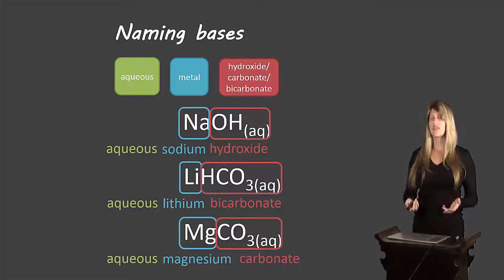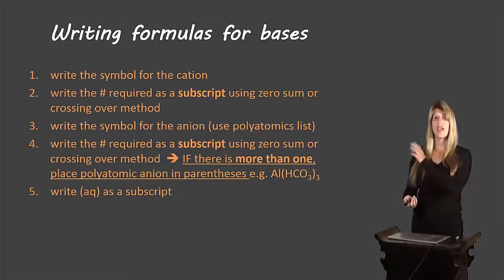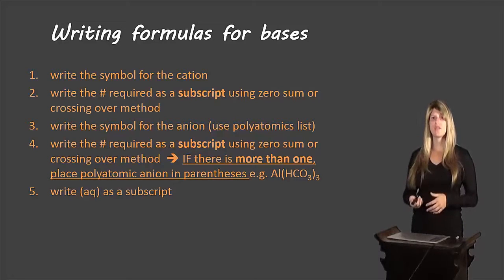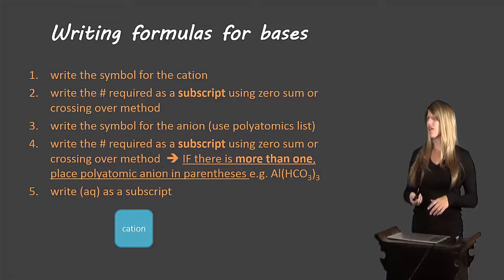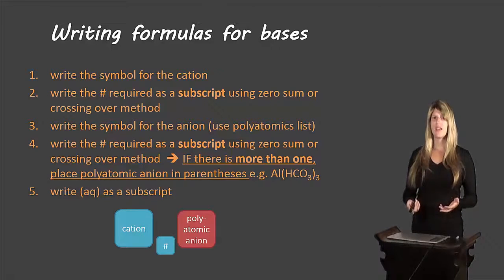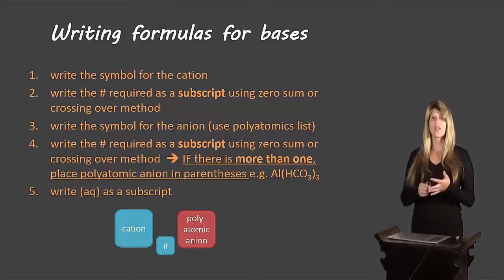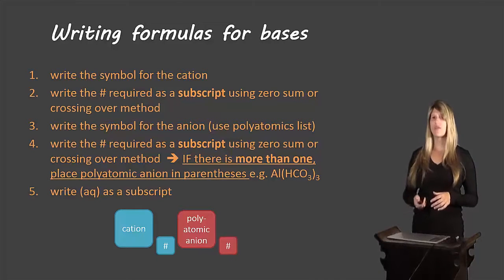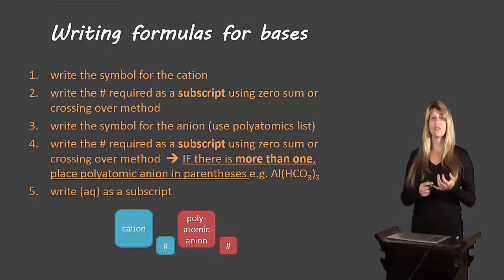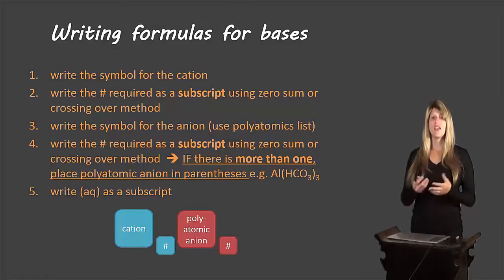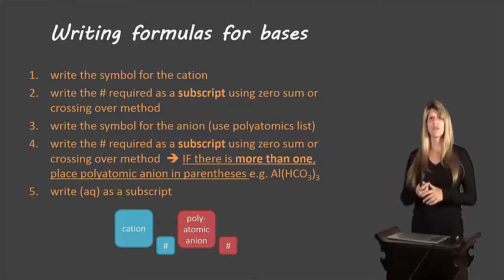That's how we name our bases. Now, what about writing formulas? You can pause the video and write these instructions down or just go through the diagrams with me. You start by writing the symbol for the cation with however many you need as a subscript, then write the polyatomic anion — hydroxide, bicarbonate, or carbonate — with however many you need as a subscript. To figure out those subscripts, use either the crossing over or the zero sum method. Remember: if there's more than one polyatomic anion, use brackets and put the subscript outside.